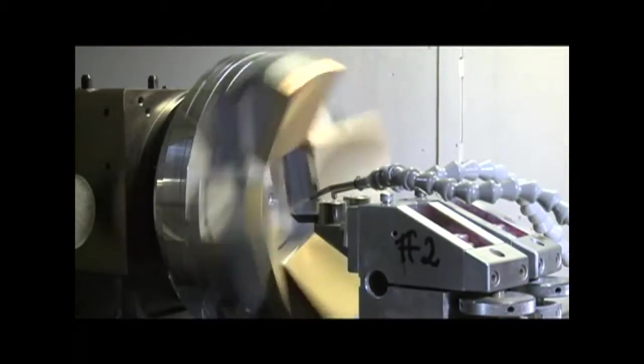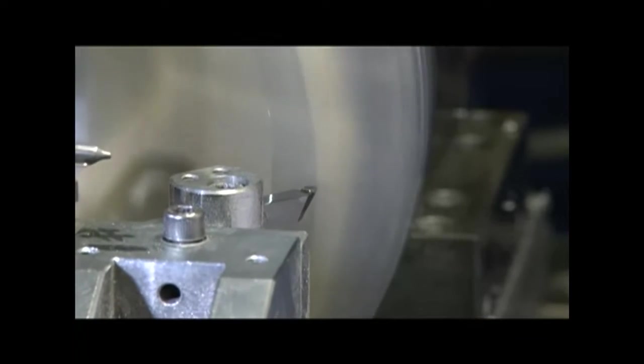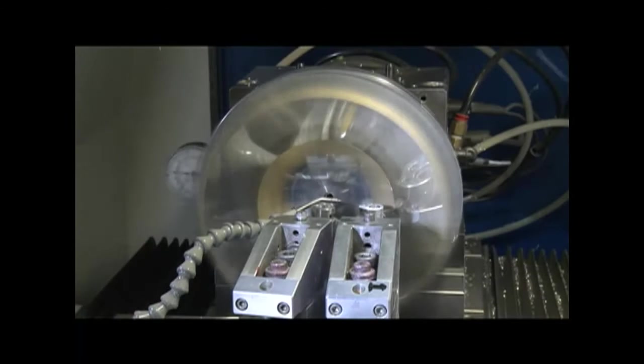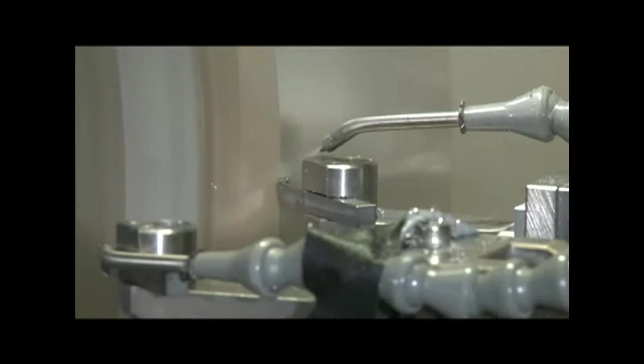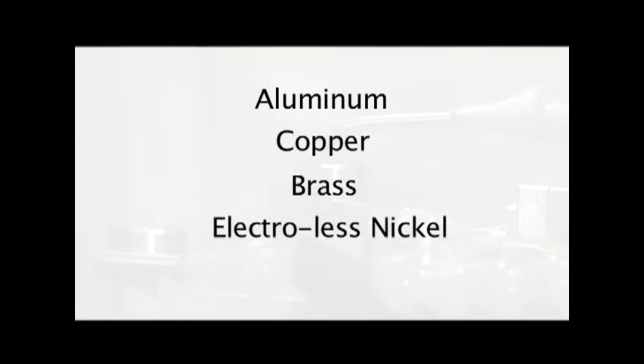Our four single point diamond turning machines are capable of generating complex higher order shapes that include aspheric and spherical surfaces, ellipsoids, hyperboloids and paraboloids. These ultra-precise diamond turning machines produce highly reflective surfaces on aluminum, copper, brass, electroless nickel and plastic work pieces.